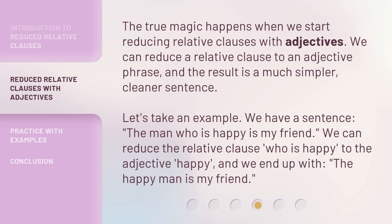The true magic happens when we start reducing relative clauses with adjectives. We can reduce a relative clause to an adjective phrase, and the result is a much simpler, cleaner sentence. Let's take an example: we have the sentence 'the man who is happy is my friend.' We can reduce the relative clause 'who is happy' to the adjective 'happy,' and we end up with 'the happy man is my friend.'